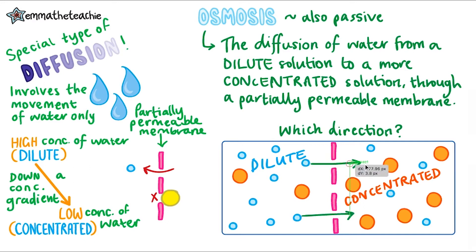Eventually, the water concentration will be equal on both sides. The water molecules will continue to move back and forth across the partially permeable membrane, but there's no further net movement of water — the water is balanced on both sides.